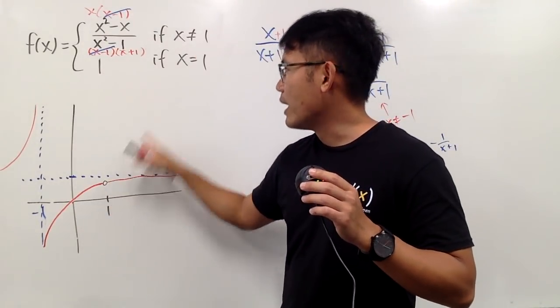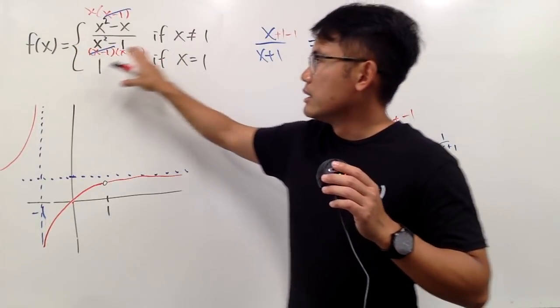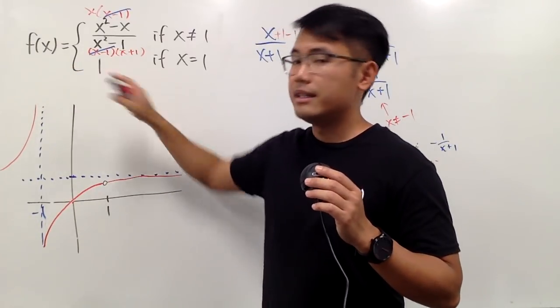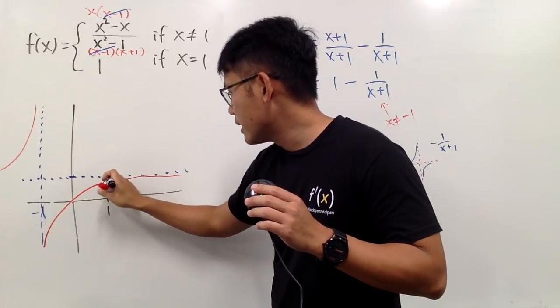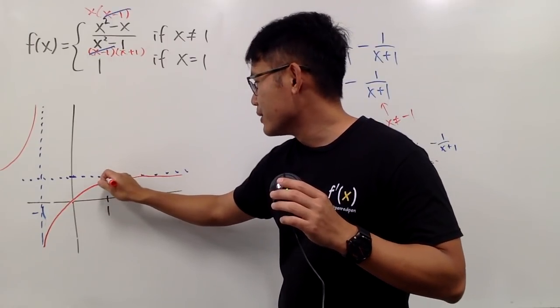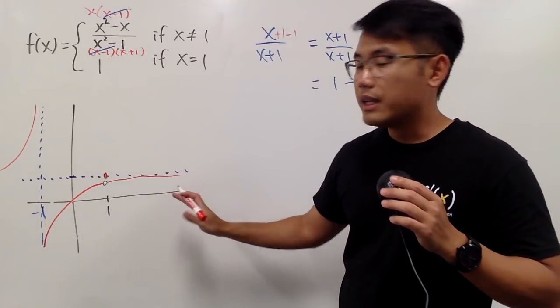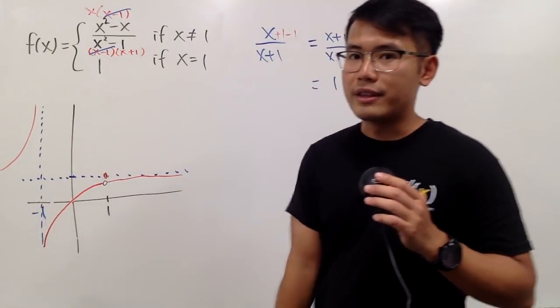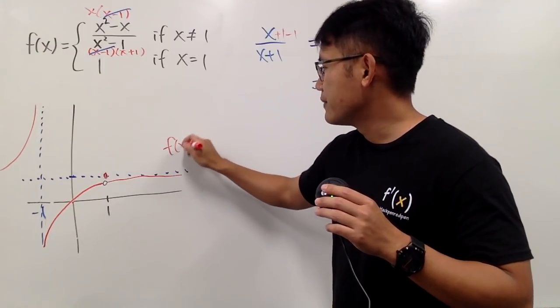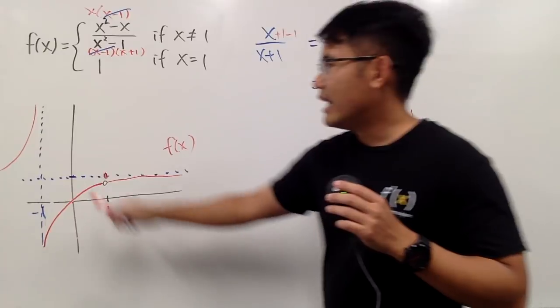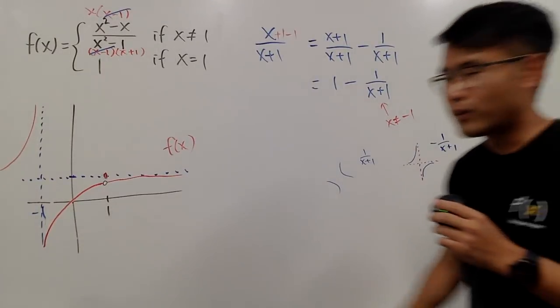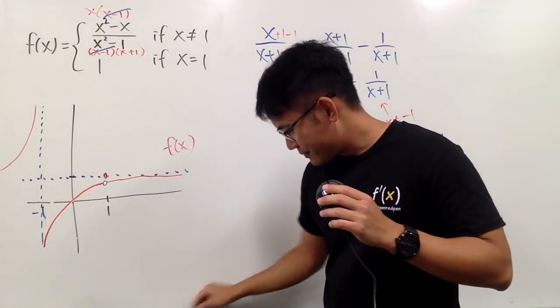And when x is equal to 1, in fact, you have to relate to the definition. When x is equal to 1, f of x was defined to be exactly 1. So we will have this 1 right here. I should put this down in red. So you'll see that the red curve, along with this red dot, all together, we have the function f of x. And if you have just this part, and that's what you're talking about, this right here. And of course, you should erase that little hole right here.